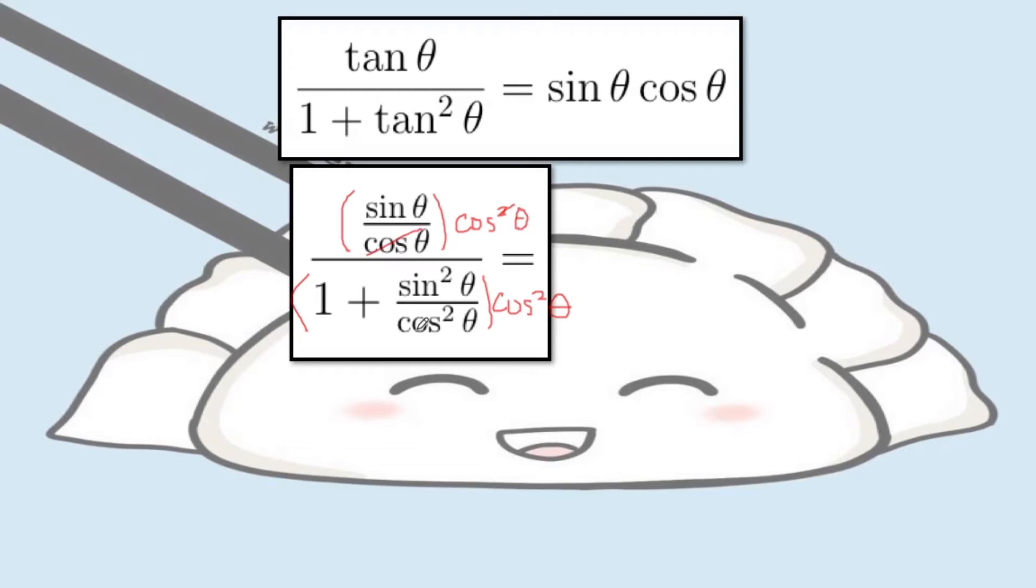And in the denominator, the cosine squared theta will be distributed. So 1 times cosine squared theta will give you cosine squared theta, and sine squared theta over cosine squared theta times cosine squared theta will give you sine squared theta.